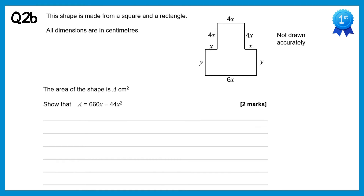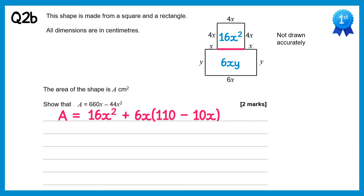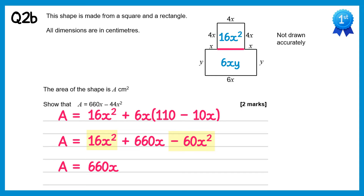For the next part of this question we need to calculate the area. I'm going to split the shape into two rectangles. The top one is 4x by 4x so that's 16x squared, and the bottom one is 6x times y so 6xy. So the area is 16x squared plus 6xy. From the previous part we know y equals 110 minus 10x so we substitute y out. Expanding the brackets: 6x times 110 is 660x and 6x times negative 10x is negative 60x squared. Simplifying gives A equals 660x take away 44x squared, which is what we needed to show.